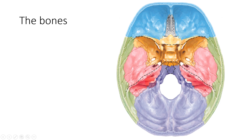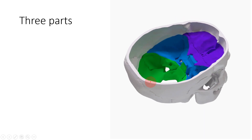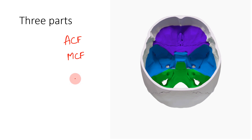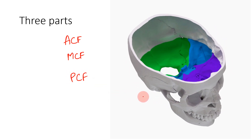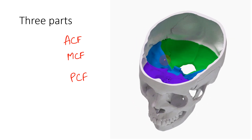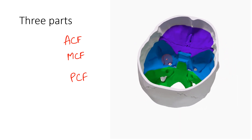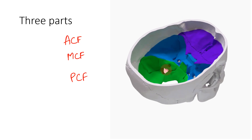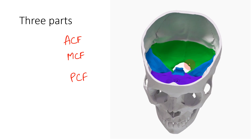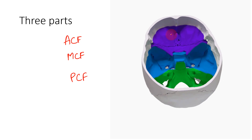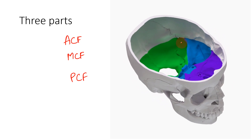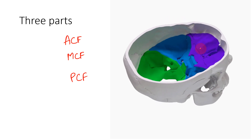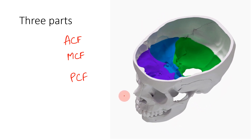The cranial fossa in three dimensions contains three parts: the anterior cranial fossa, the middle cranial fossa, and the posterior cranial fossa. This is almost like a stepwise or staircase arrangement — from the posterior cranial fossa you step up to reach the middle cranial fossa, and step up again to reach the anterior cranial fossa. This spatial concept is very important to understand.